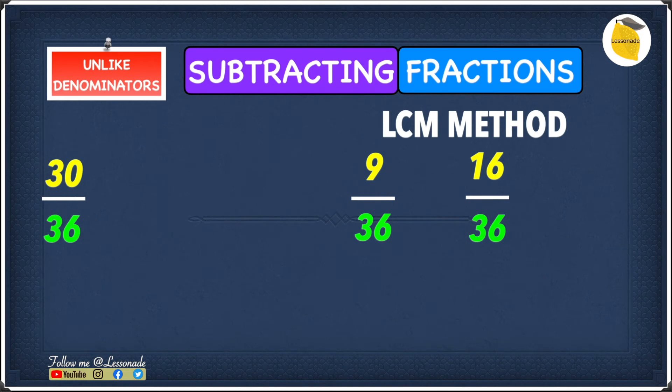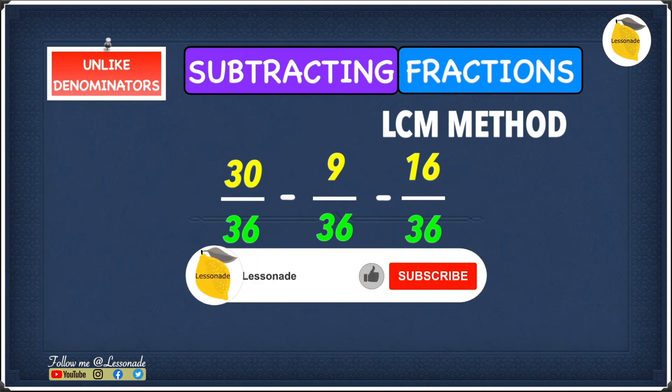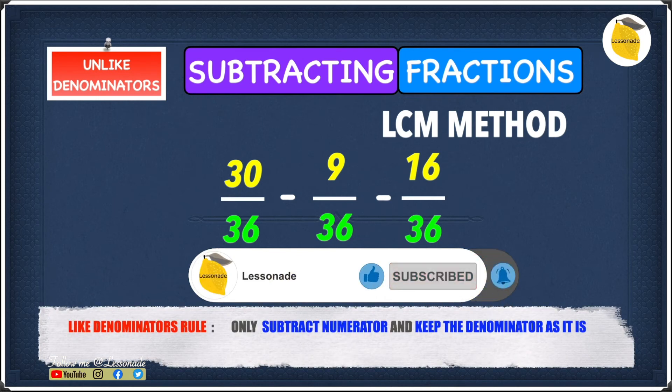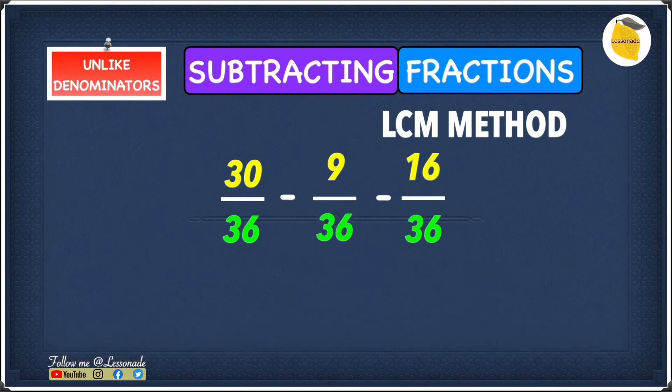So now the next thing we're going to do is subtract these fractions. Now we have 30 over 36 minus 9 over 36 minus 16 over 36. We know that all three of these fractions have the same denominators, which means we only have to subtract the numerator. So 30 minus 9 is 21, and 21 minus 16 is 5. This means 5 becomes our numerator. For the denominator, because the denominators are the same, whatever denominator is in the question will be in our answer. The denominator is 36, so our answer to this question is 5 over 36.